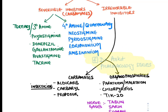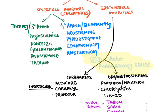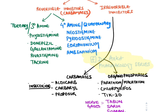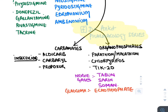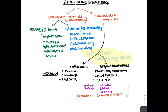Reversible inhibitors are divided into tertiary amines and quaternary amines. Tertiary amines are lipid-soluble, so they can cross the blood-brain barrier and penetrate the cornea when given as topical eye drops. Examples include physostigmine for glaucoma, and donepezil, galantamine, rivastigmine, and tacrine for Alzheimer's disease. Quaternary amines act only in the periphery and are given for conditions like myasthenia gravis, cobra bite poisoning, and reversal of skeletal muscle relaxants. Irreversible inhibitors are used as insecticides and nerve gases; the only organophosphate used topically is ecothiophate for glaucoma, though it causes cataract and is now rarely used.